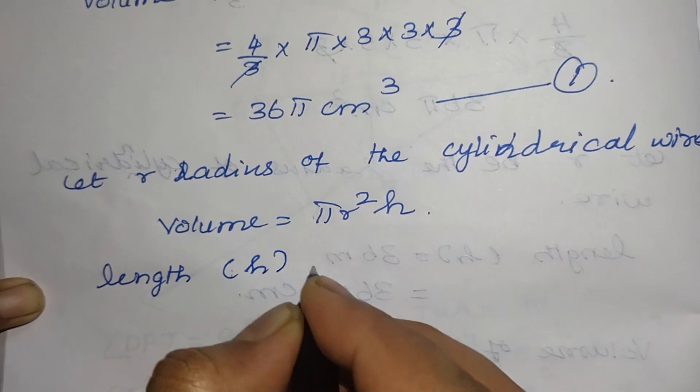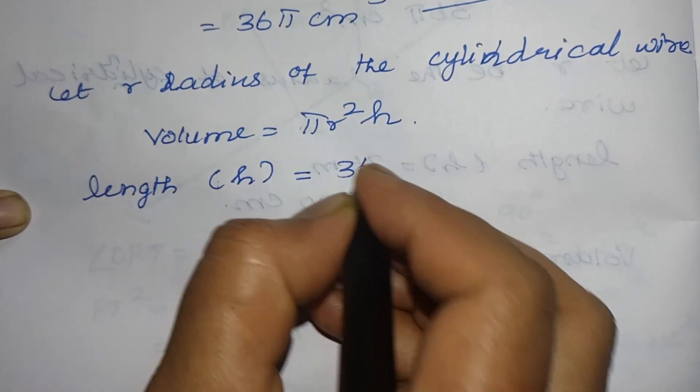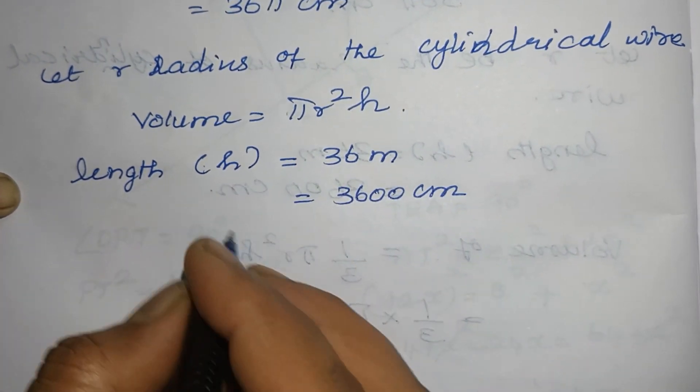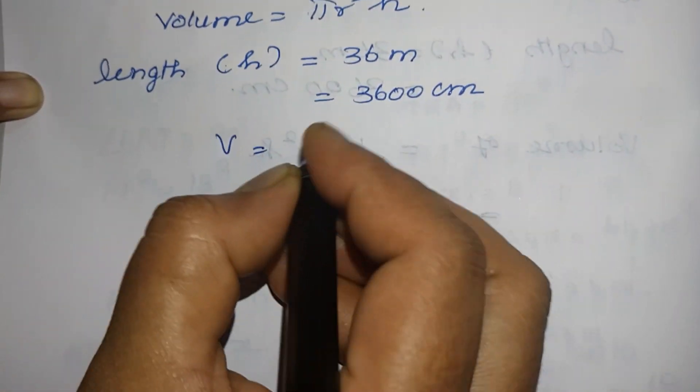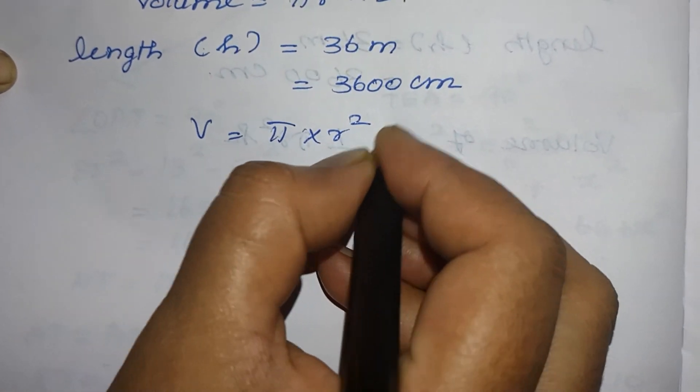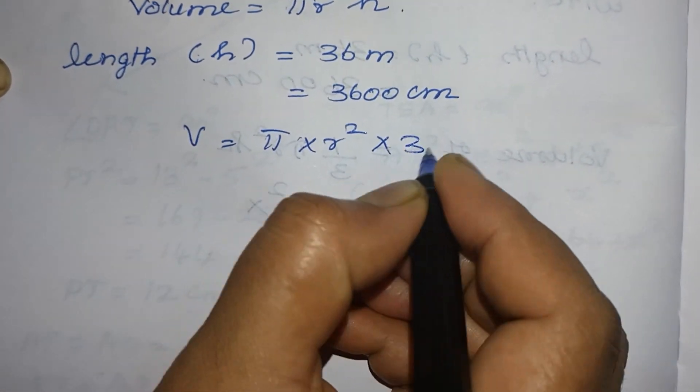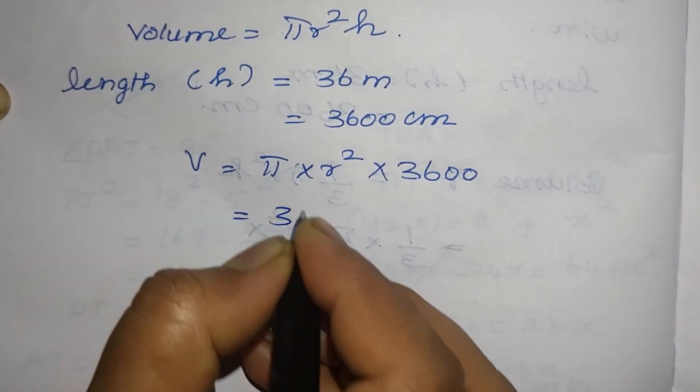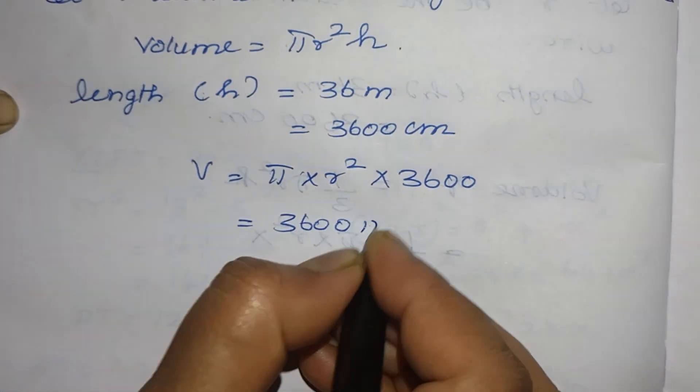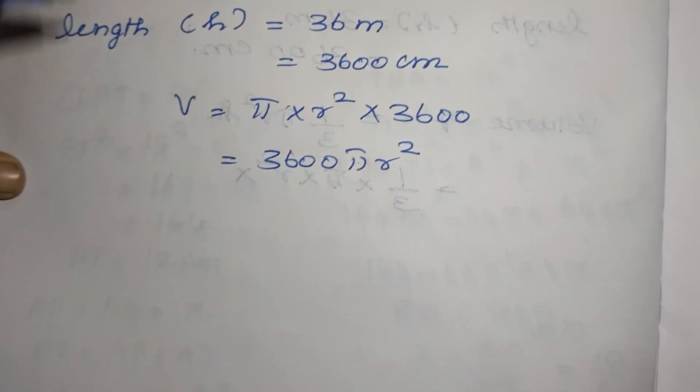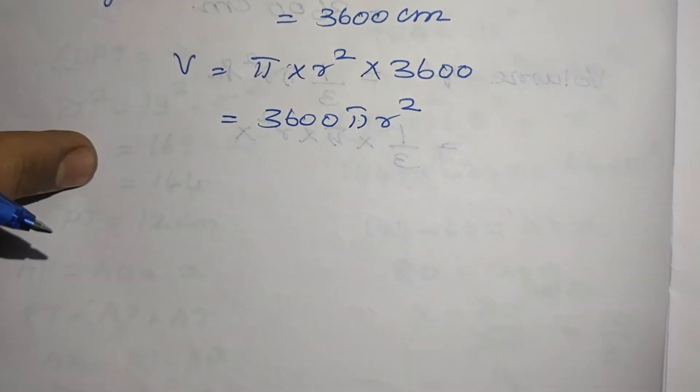Length of the wire becomes height. 36 meter it is given so we convert into centimeter 3600 centimeter. Volume V equal to pi r square, r square we have to find, so h equal to 3600. 3600 pi r square.